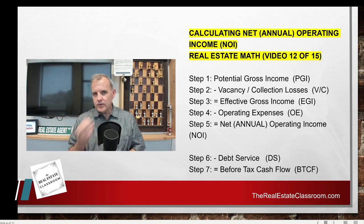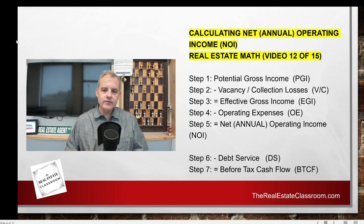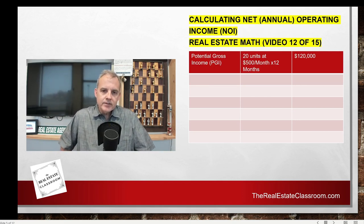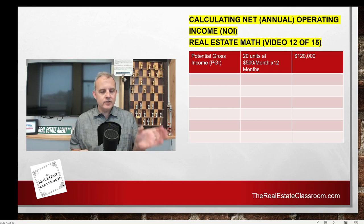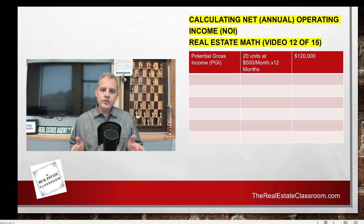I've had a couple of students say they've had this particular question on their broker's exam, so I wanted to make sure I included it. Let's put this to practical use and figure out our net annual operating income. We have 20 units at $500 a month. We take 20 units, multiply by $500 a month, then multiply by 12 months, and that gives us a potential gross income of $120,000.